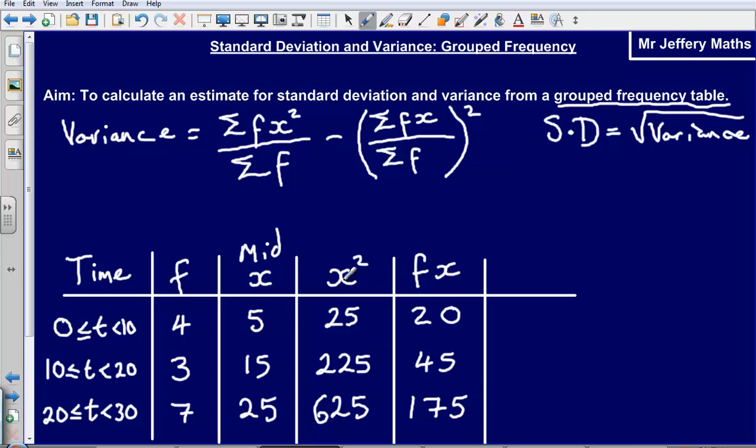Now next part, I need to calculate the frequency multiplied by x squared, so fx squared. So I've got 4 times 25, that's going to give me 100. Then I've got 3 multiplied by 225, that's going to give me 675. And then lastly I've got 7 multiplied by 625, that's going to give me 4,375.